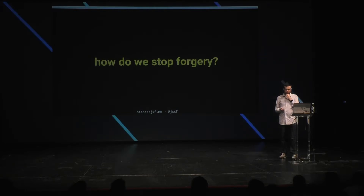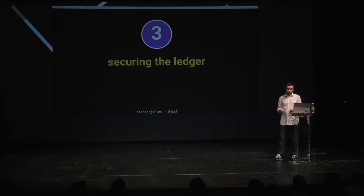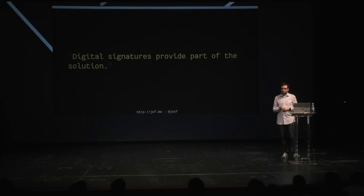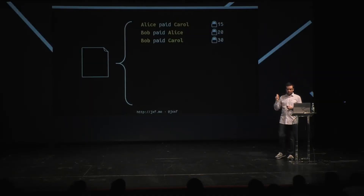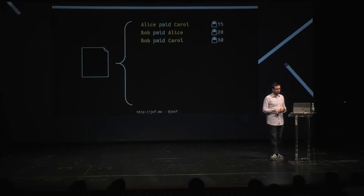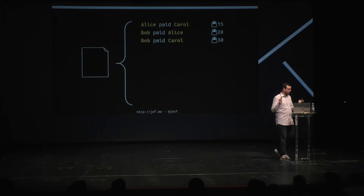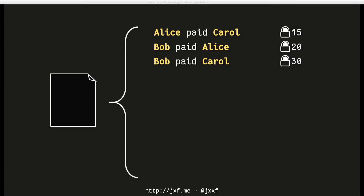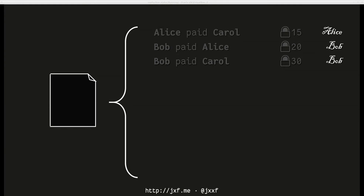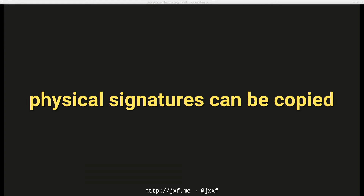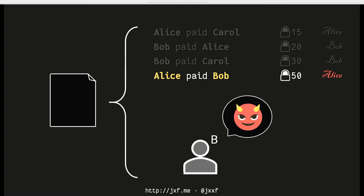We can't trust this ledger for two reasons: people can add lines that aren't valid, and people can remove lines that are valid. We need to solve these two problems before people can trust this ledger. The first problem is how do we stop forgery? Satoshi gave us an idea in the original paper: digital signatures are part of the solution. We can require that transactions be signed by whoever authorized them. But physical signatures can be copied or forged, so we need digital signatures instead.